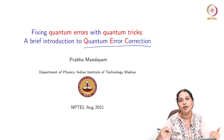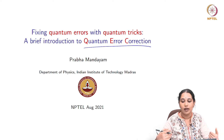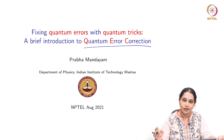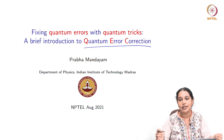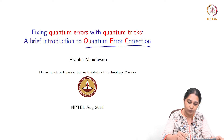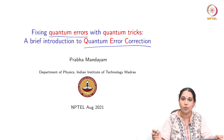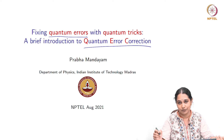Having learnt about quantum bits, quantum gates, quantum circuits and quantum algorithms, and in particular how they offer us speed-up over classical tasks in several cases, what remains is to ask what are the key challenges before us today in realizing a physical scalable quantum computing device. And this brings us to the concept of quantum errors — errors that affect quantum bits and quantum gates — and how do we fix them. And this is the subject of quantum error correction.